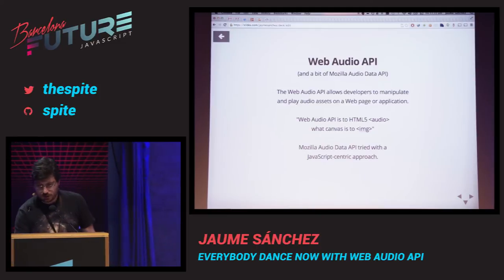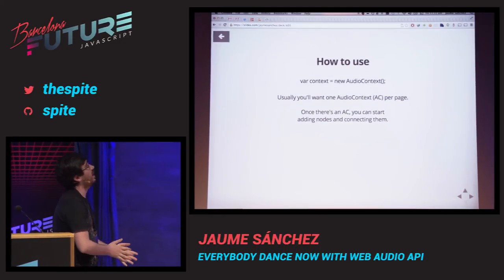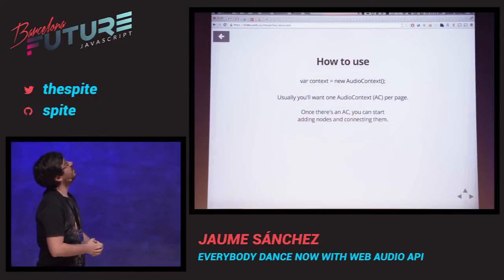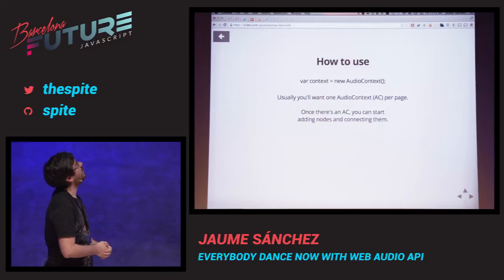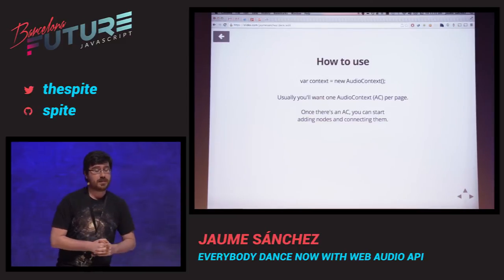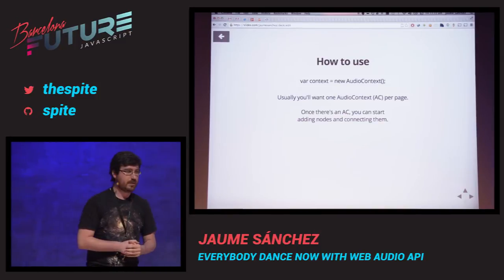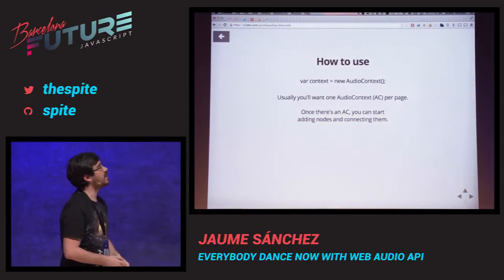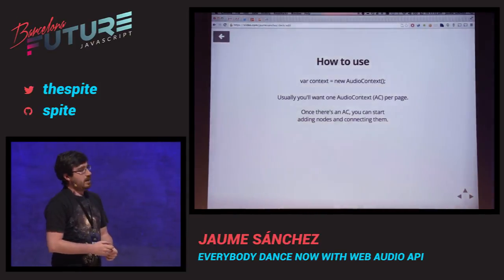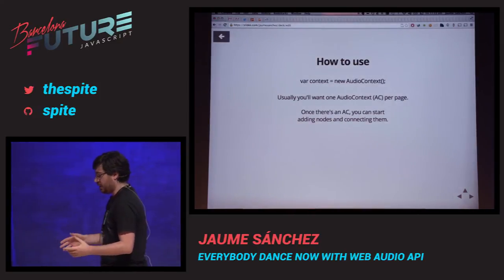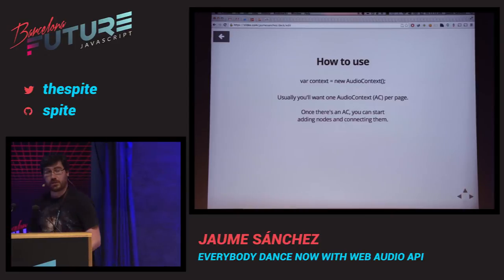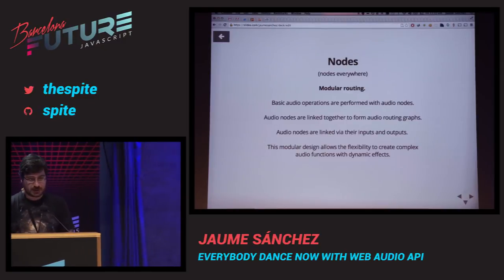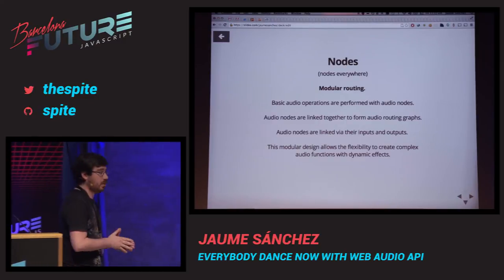So how do you use it? You basically have to instantiate an audio context. That's your object. You create it with that definition, and usually you just use one context per page, because you want everything to go into the mixer, everything has to go into the user's output system — usually the speakers or the headphones. Once you've got all this instantiated, you can start creating your routing graph, adding nodes to the system. Web Audio API is based on nodes.